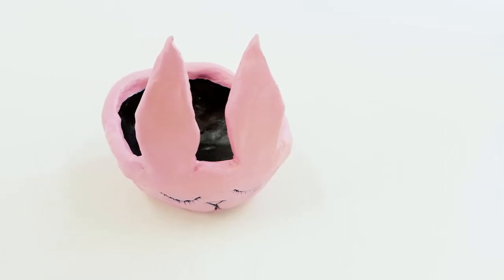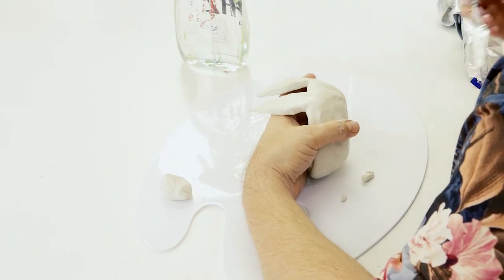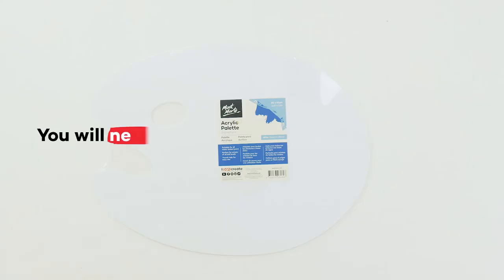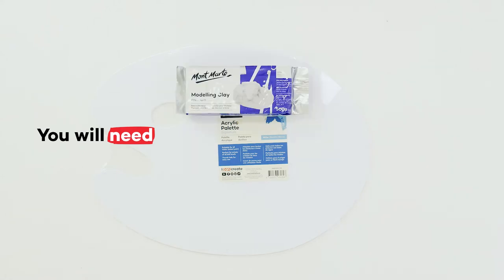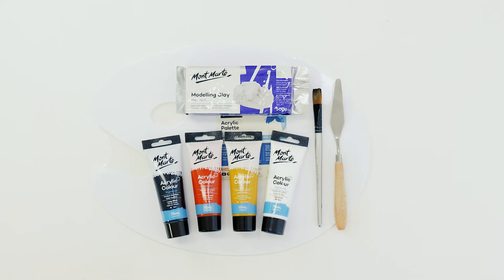With any sculpting project a base is required to protect your work surface from clay and so you can spin the piece to work on it from different angles. We'll be using the white air hardening modelling clay in a 500 gram block. We'll also need a palette knife to cut our clay and a medium flat taclon brush. For paint we'll be using titanium white, yellow ochre, brilliant red and black all in the acrylic colour range.